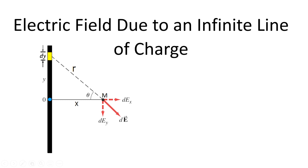Now to calculate the electric field of an infinite line of charge, first we are going to take an element of charge. Let's consider this wire is charged positively. So if the wire is charged positively, we take an element of charge. This element of charge will create an element of electric field. We pass the line from the element of charge to point M where we calculate the electric field, and then this electric field will be away from the charge.